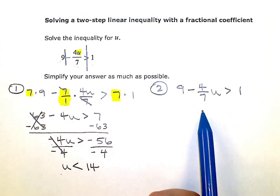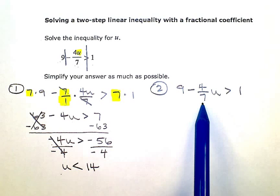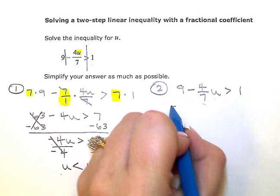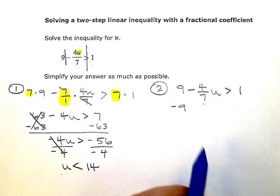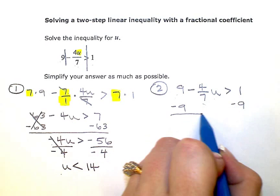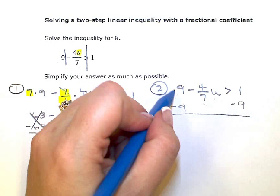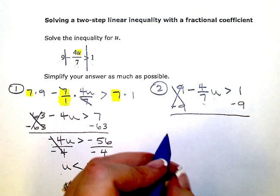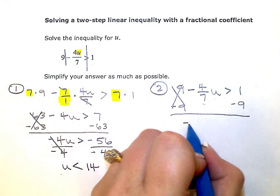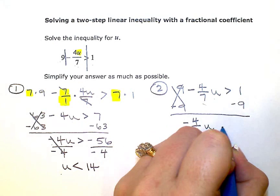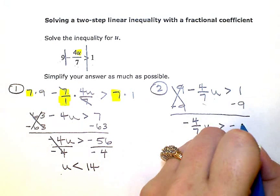You can use a calculator to do the fraction computations if you're not good with fractions. To get the u by itself, the first thing I need to do is get rid of this nine, this constant term out here. I'm going to subtract nine from both sides. I'm subtracting, not multiplying or dividing by a negative, so I don't need to flip my sign here. When I simplify, that leaves me with negative four sevenths u is greater than one minus nine is negative eight.